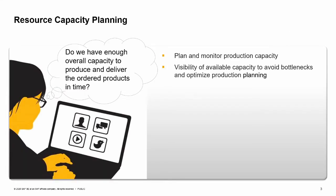A significant part of the production process involves the consumption of resources. We can define available capacity, consume it in production, and manage resource capacity availability. This functionality allows us to plan and monitor the capacity of resources, to avoid bottlenecks and optimize production planning.